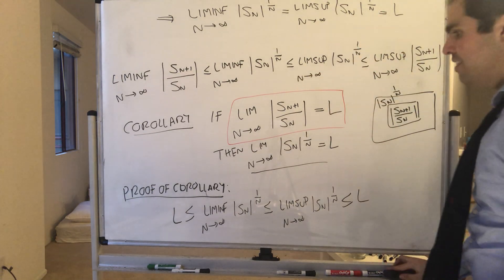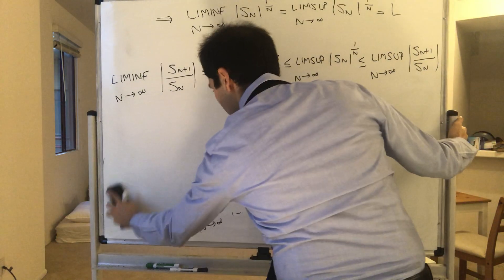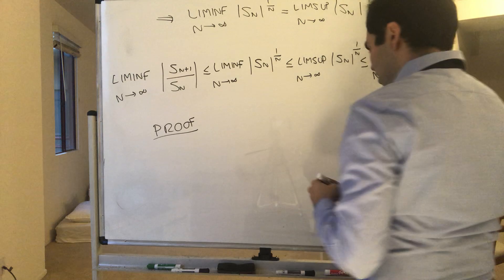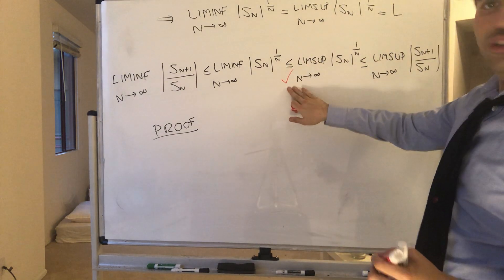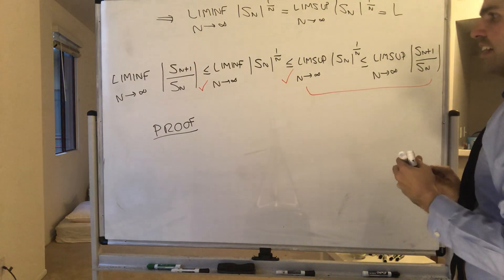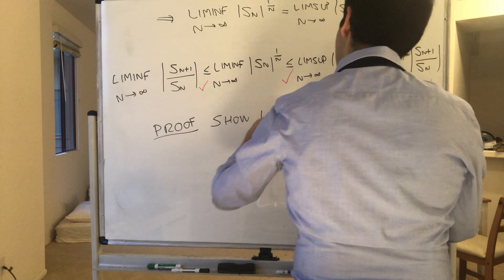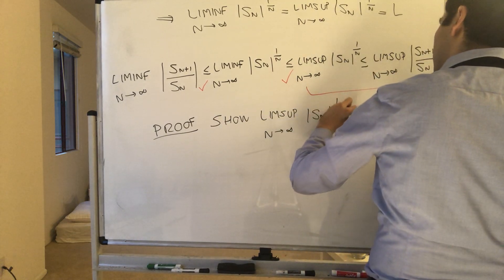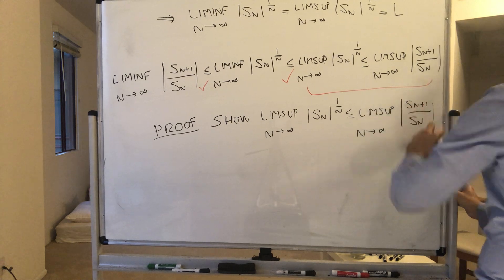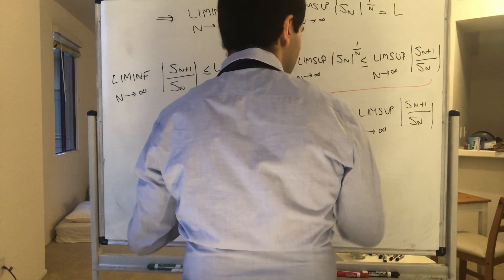Now let's prove this identity. First of all, the liminf is always less than or equal to the limsup, so that middle inequality is already proven. If we show one side of the identity, we can show the other in a similar way. So let's just show the last part: that the limsup as n goes to infinity of the nth root of S_n is less than or equal to the limsup of the ratio part. Let's call this L — so let L be the limsup of the ratio part.